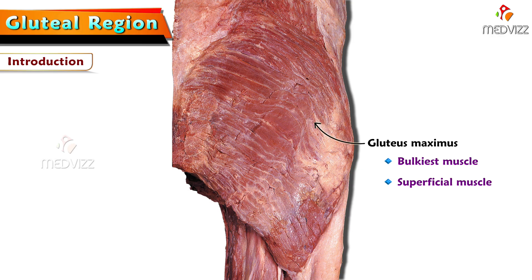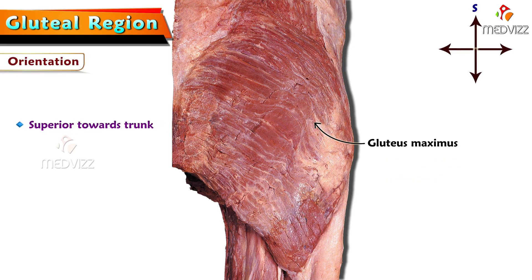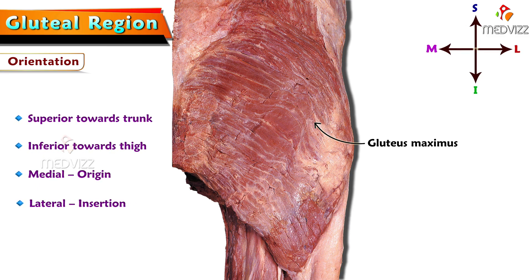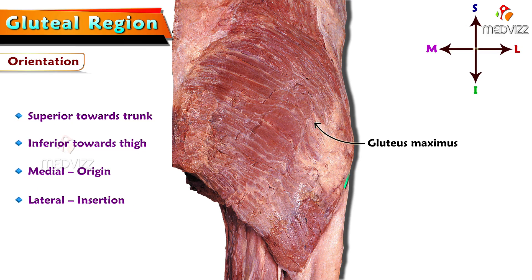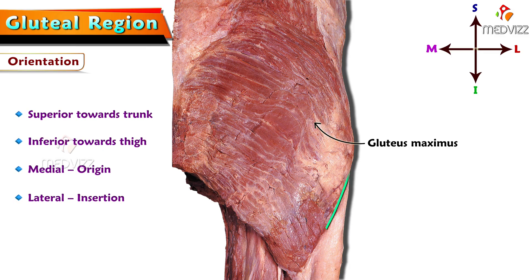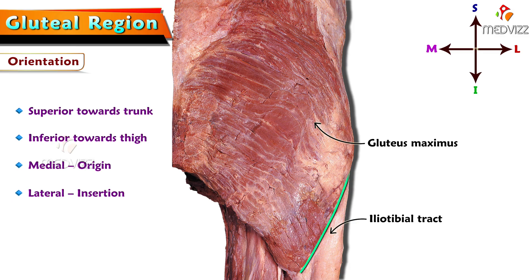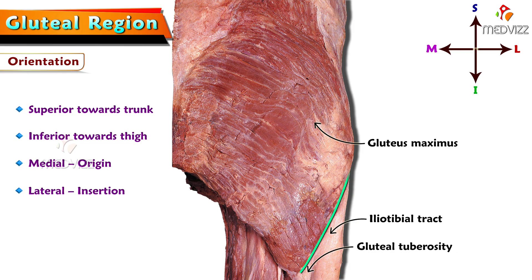After removing the skin, superficial fascia, and deep fascia, we can appreciate the gluteus maximus. The orientation of this specimen is superior towards the trunk, inferior towards the thigh, medial where the gluteus maximus gets its origin, and lateral aspects where the muscle is seen coursing obliquely downwards towards the lateral side, inserting into the iliotibial tract and gluteal tuberosity.